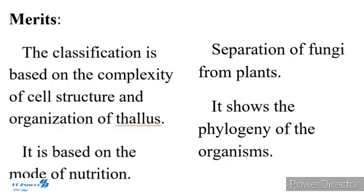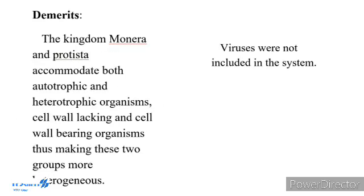Merits of five-kingdom classification: The classification is based on the complexity of cell structure and organization of the thallus. It is based on the mode of nutrition. It separates fungi from plants, and it shows the phylogeny of the organisms. Demerits of five-kingdom classification: The kingdoms Monera and Protista accommodate both autotrophic and heterotrophic organisms, as well as cell wall-lacking and cell wall-bearing organisms, thus making these two groups more heterogeneous. Viruses were not included in the system.